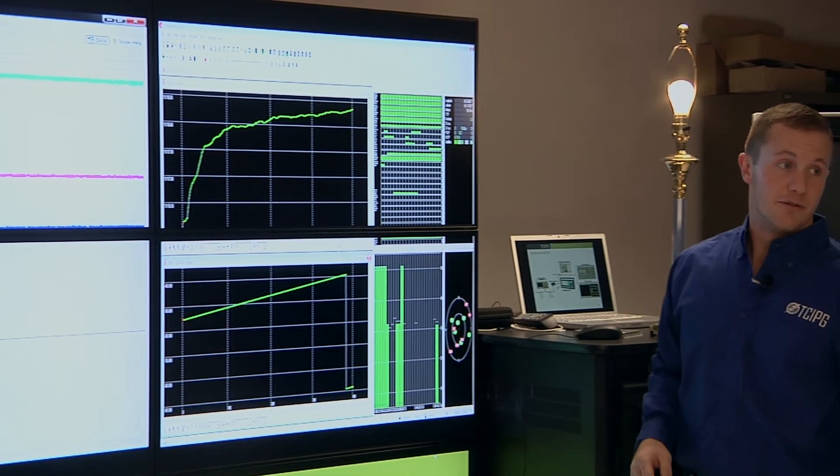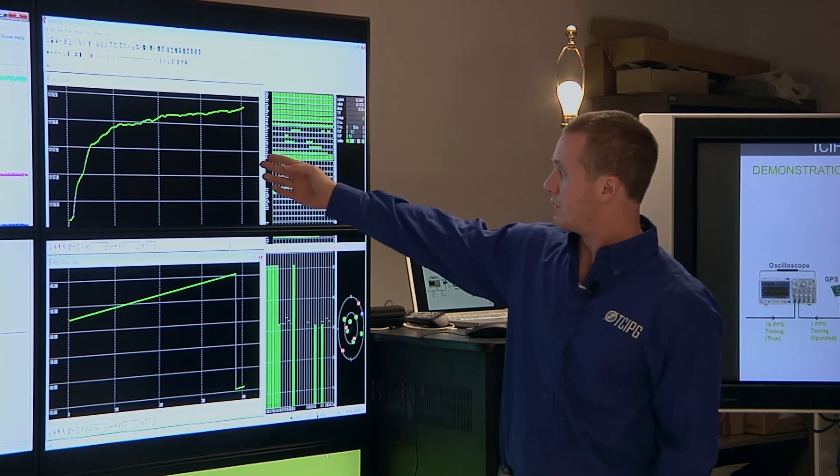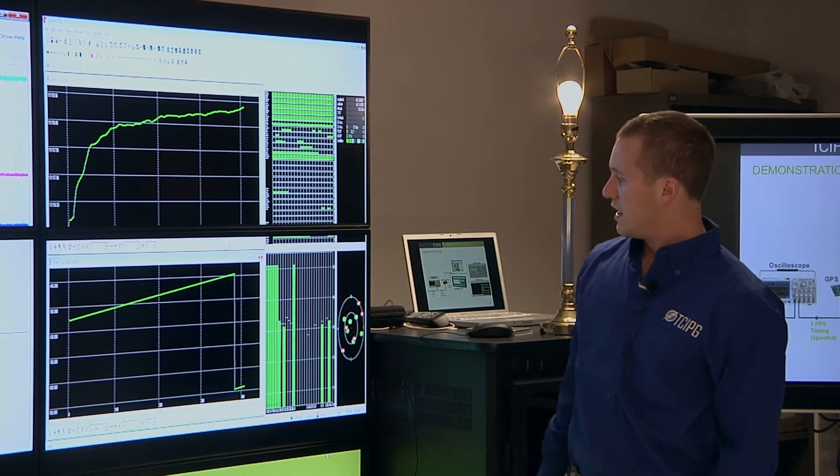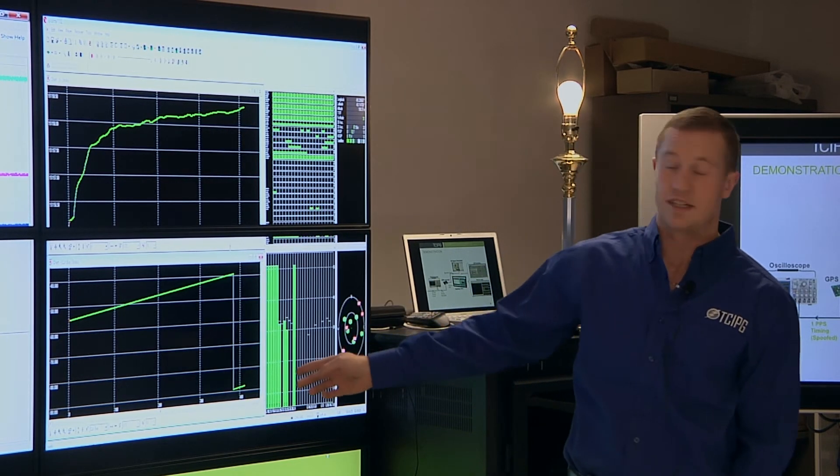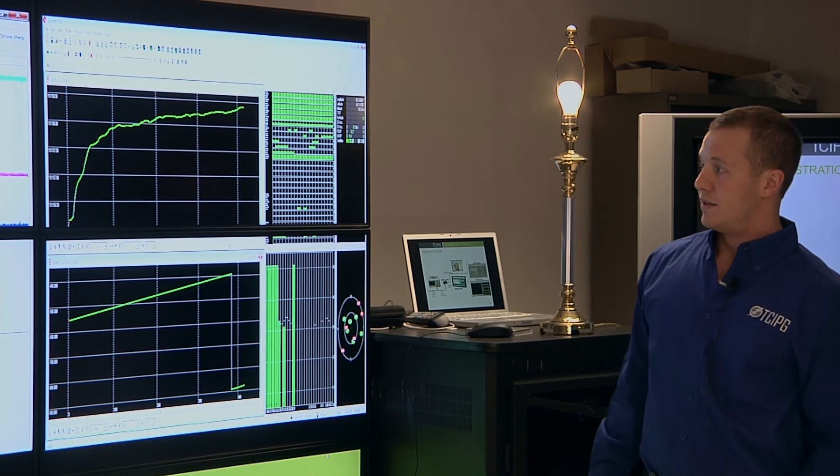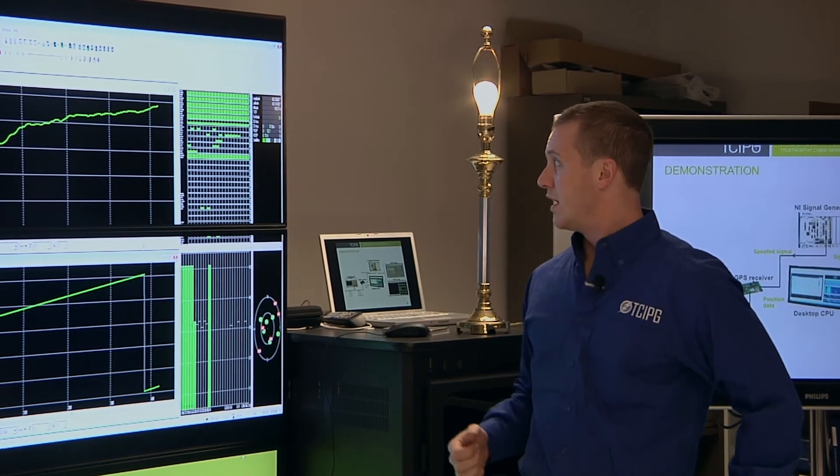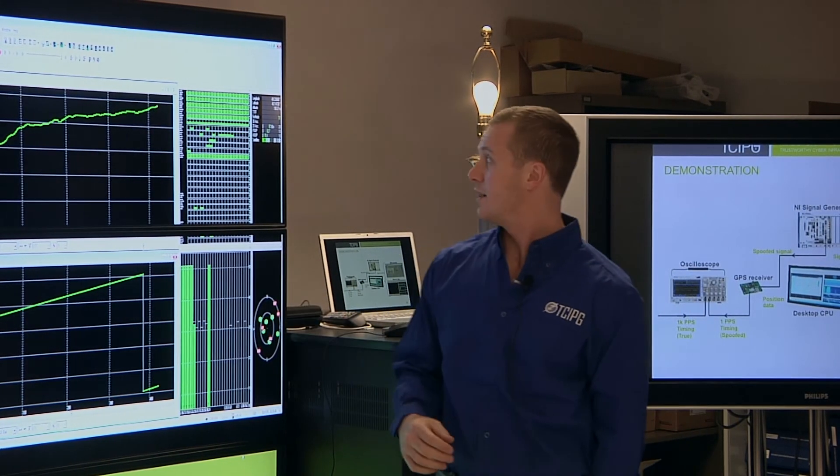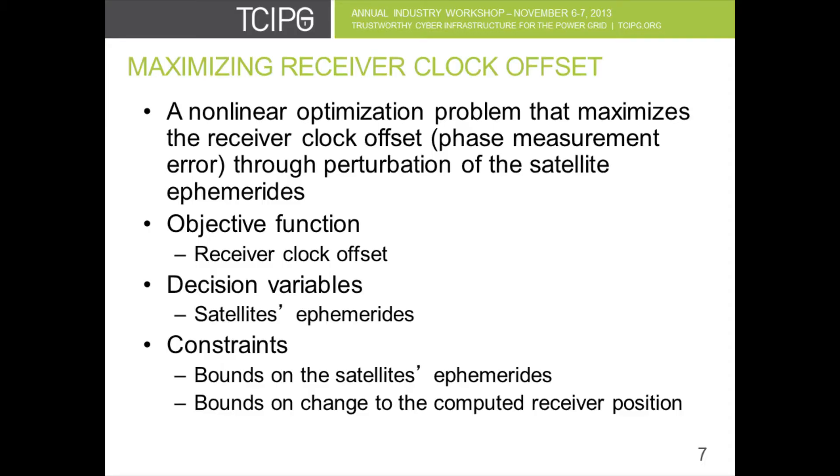As we look at the receiver position and clock offset plots on the computer, you'll see that the receiver position does not shift dramatically. And then looking at the clock offset, you see that 500 microseconds again here shown by the jump in the plot. So we were able to show that we were able to calculate the data that will give us this clock offset while keeping the position stable.